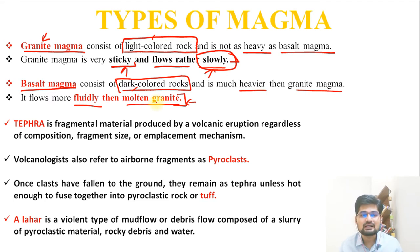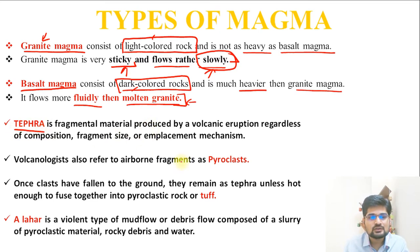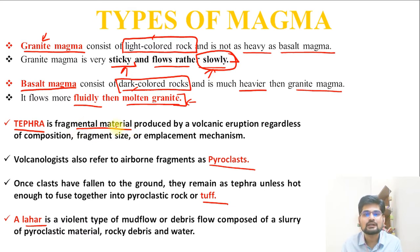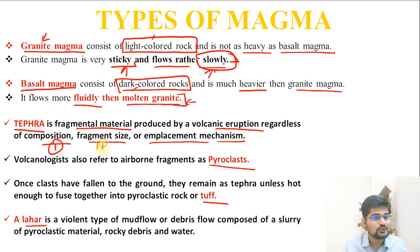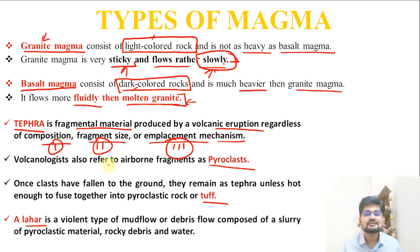Apart from magma classification, there are important terminologies: tephra, pyroclasts, tuff, and lahar. Tephra is fragmental material produced by volcanic eruption regardless of composition, fragment size, or emplacement mechanism. It is the name given to all materials released by volcanic eruption in the form of fragments, which may vary in size, composition, and emplacement.